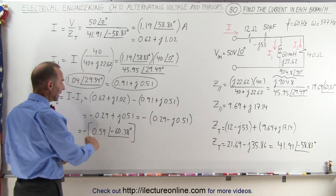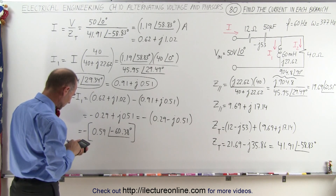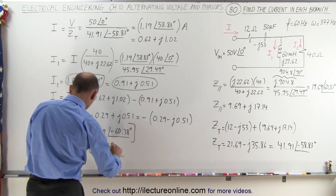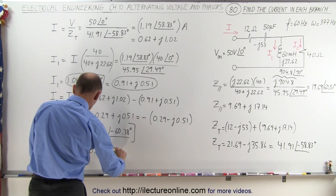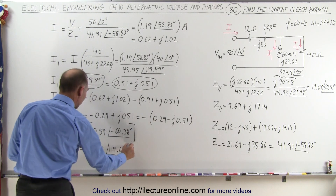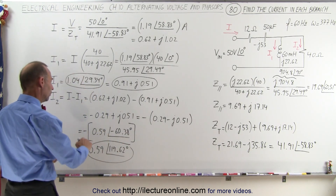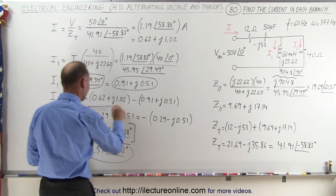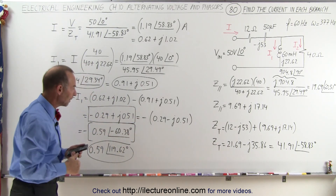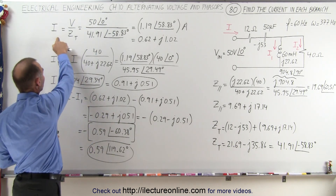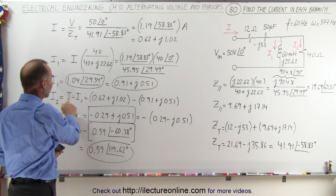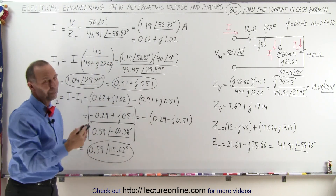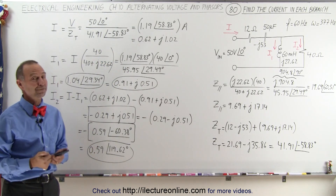To get rid of the negative, we can add 180 degrees to that, giving us 0.59 with a phase angle of positive 119.62 degrees. Either way will give us the right answer. So I2 equals 0.59 at 119.62 degrees, or equivalently minus 0.59 at minus 60.37 degrees. And now what we found was the total current to the circuit, I1 in branch 1, and I2 in branch 2 by subtracting I1 from the total current. We could have also used the current divider technique to find I2, but this alternative approach works as well. And that's how it's done.